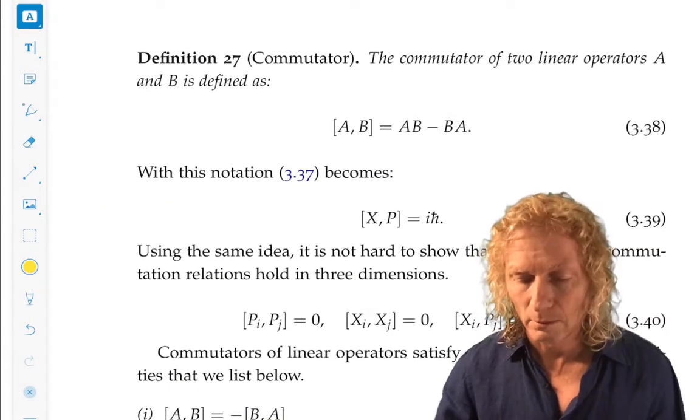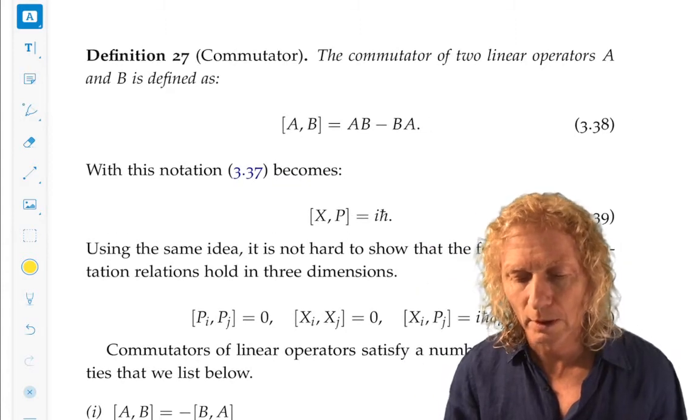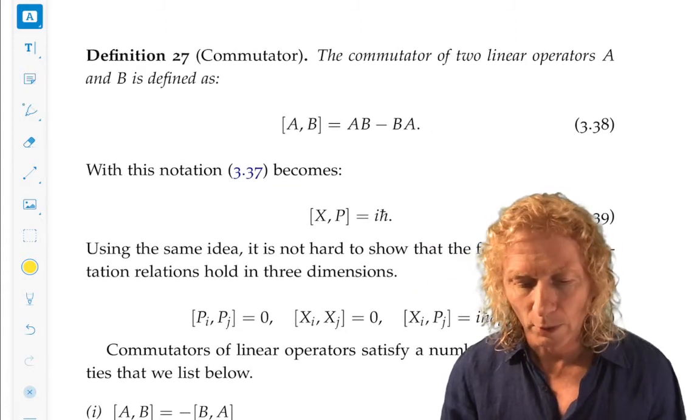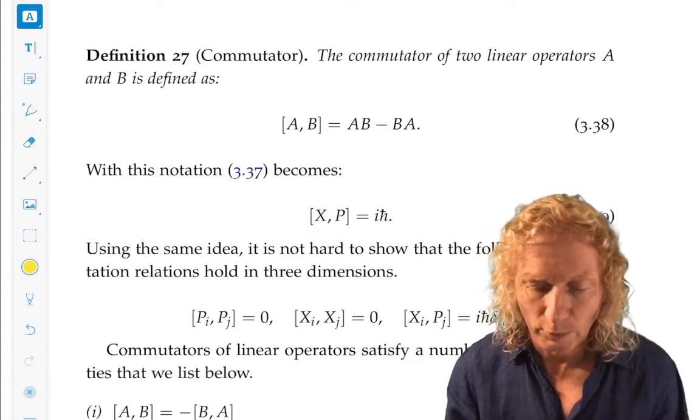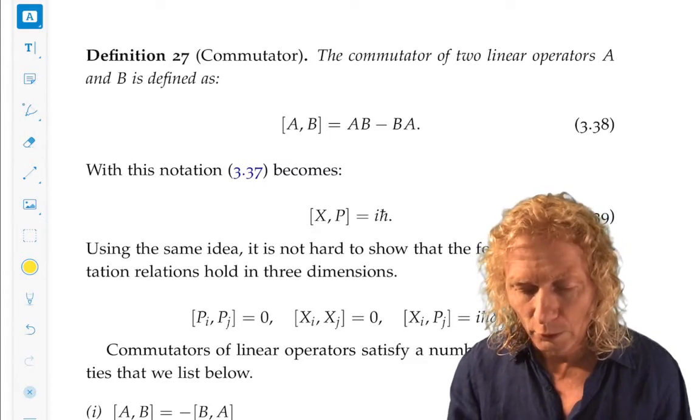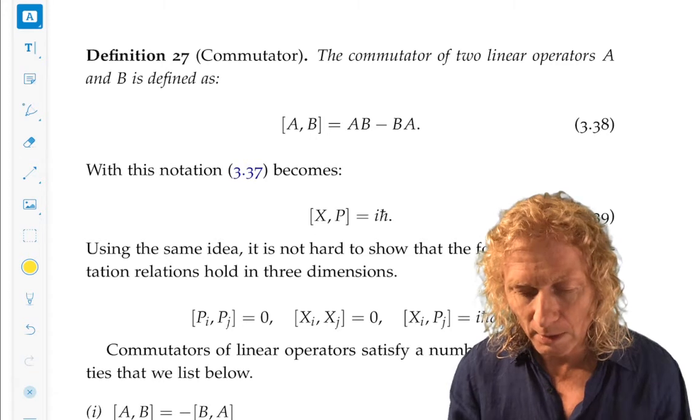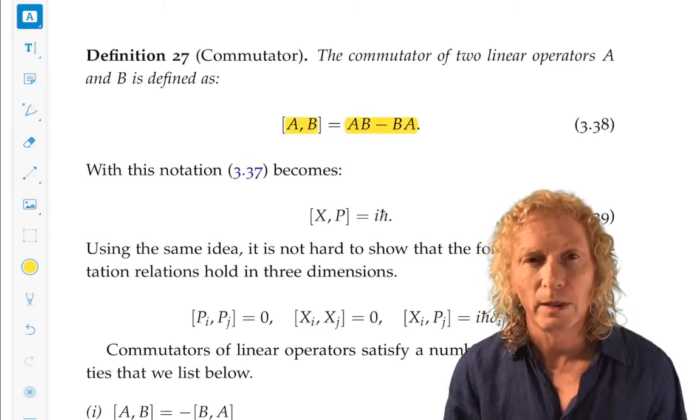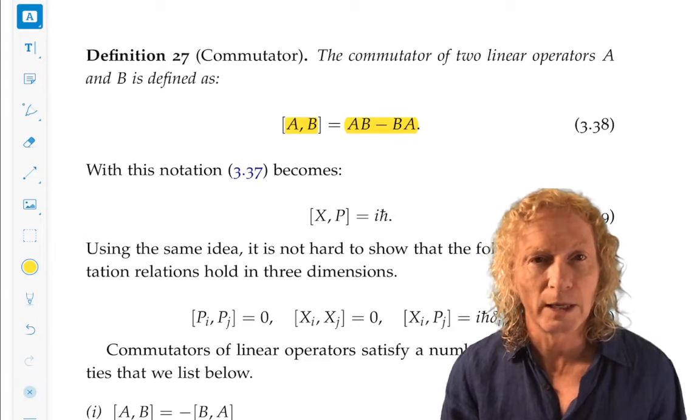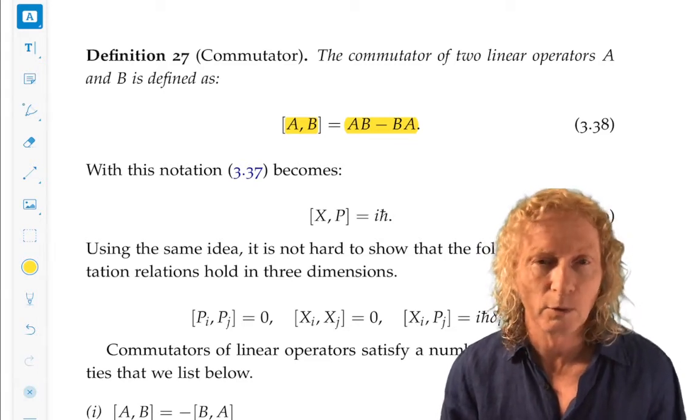We can now give you the definition of the commutator of two linear operators. Commutator, we denote that by the two operators, A and B, square brackets, A comma B. And the order is important because that's equal to AB minus BA. That's a measure of the extent to which A and B do not commute. If it's zero, they commute.